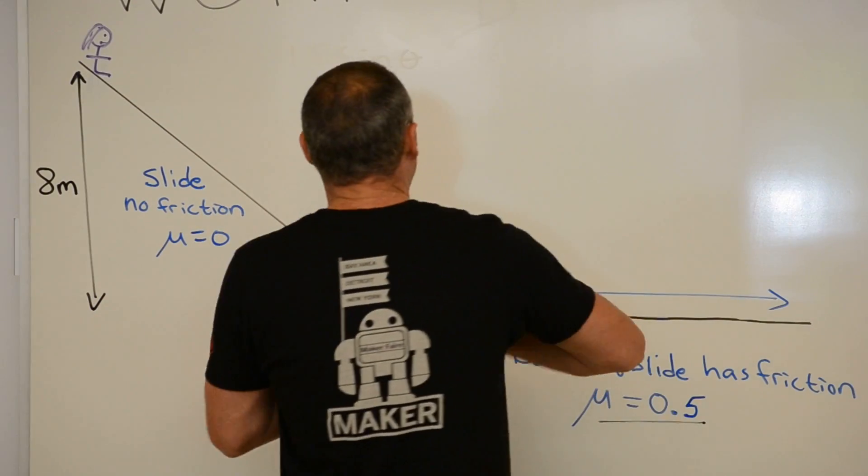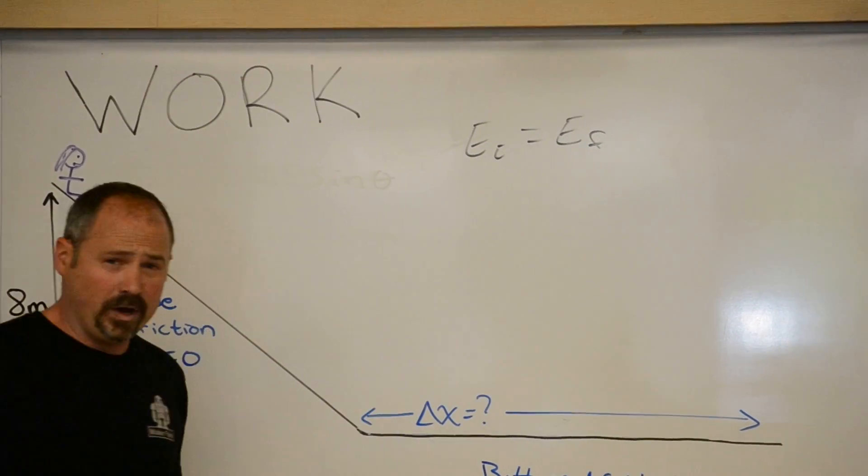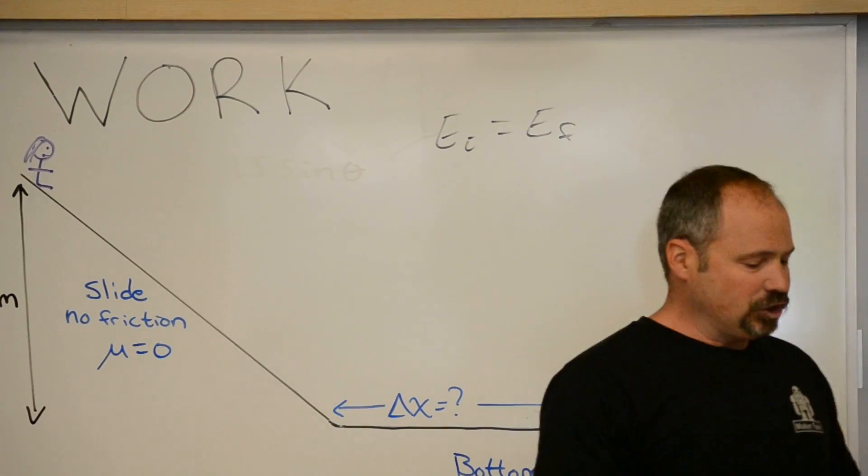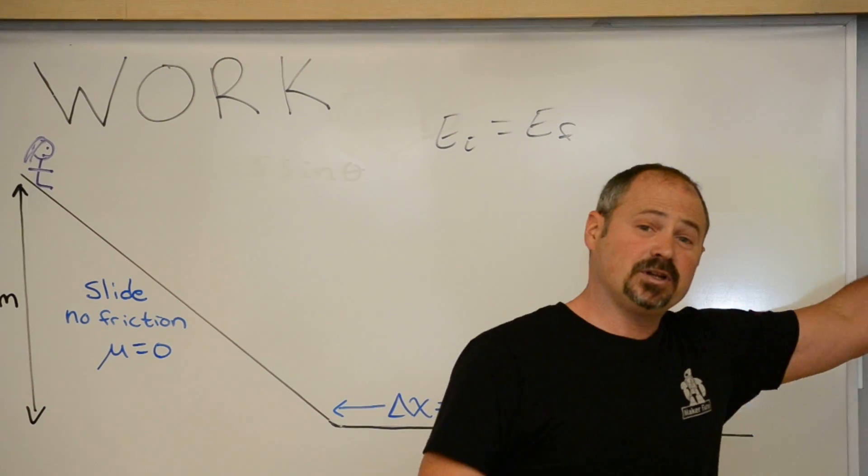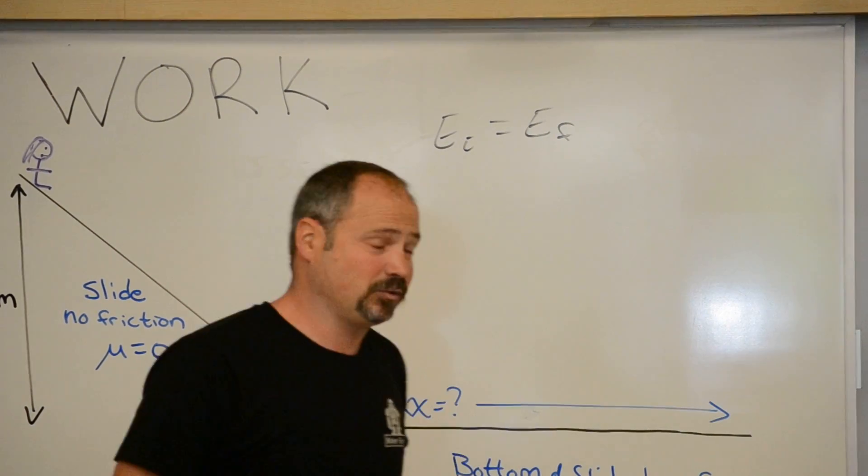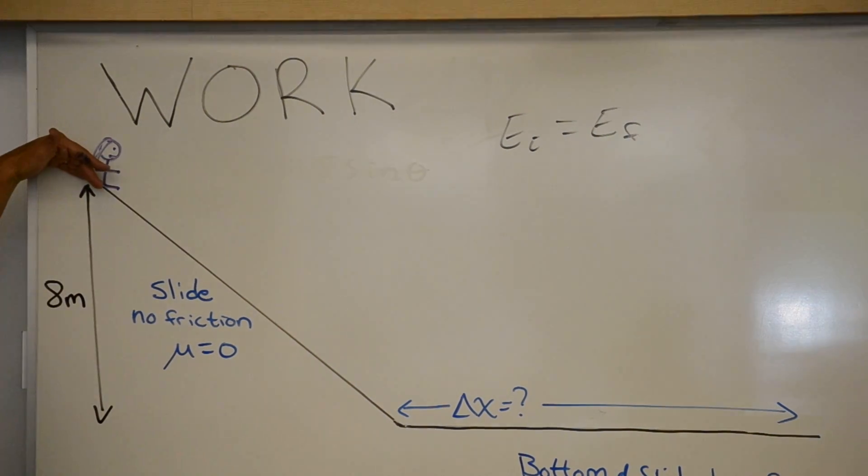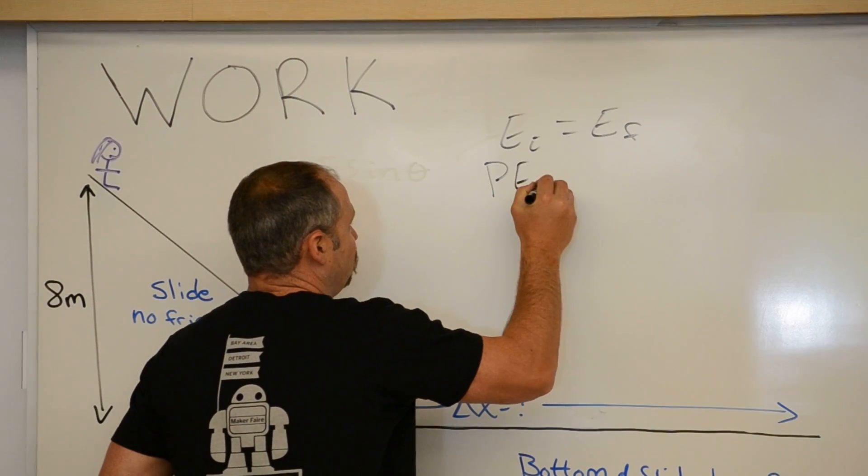We know that the initial energy equals the final energy. Always, always true that energy is conserved. Now, energy can be moved from one system to another and that's what work does. Work is the transfer of energy. Well, what's the initial energy? Well, she's sitting up here at the top. She's not moving. There's no springs. The only energy she has is potential energy of gravity.